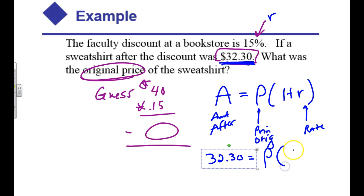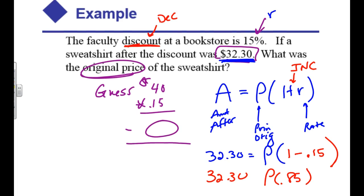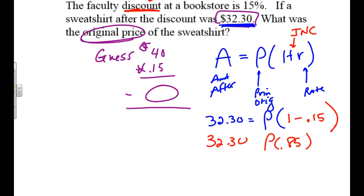Find the original amount, find P if, now be careful, one plus means I'm increasing. This is not an increase rate. This is a discount. So this is a decrease. So instead of one plus the rate, I'm going to do one minus the rate, which is 15%. And one minus that 15% is 0.85. And so to finish this off, all I need to do is divide both sides by 0.85.